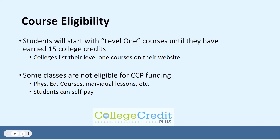Every college will list their level one courses that are available on their campus on their website. Besides having courses that are eligible, there also are courses that are not eligible for CCP funding. These include courses such as phys ed, study abroad, or individual lessons. If you choose to take one of these classes, your family will be responsible for all the costs.